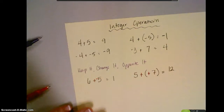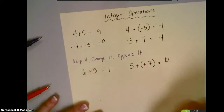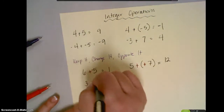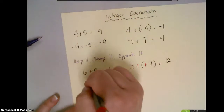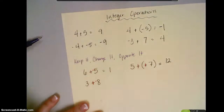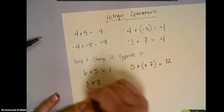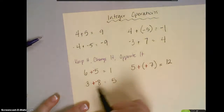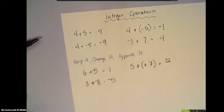I could also do this when I have a smaller number and I'm trying to subtract a bigger number from it. So, if I have 3 minus 8: keep it, change it, opposite the positive 8 to a negative 8. Now, I'm going to subtract 8 minus 3 because the signs are different. 8 minus 3 is 5, and then negative 8 has the bigger absolute value, so my answer would be negative 5.